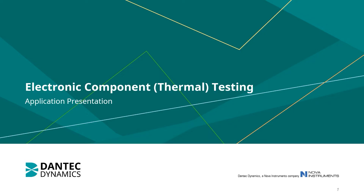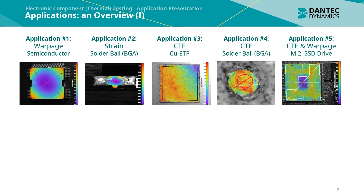Welcome to this application presentation of digital image correlation being used for electronic component thermal testing. The applications presented include warpage measurement of semiconductors, strain measurement of solder balls from a ball grid array, coefficient of thermal expansion or CTE measurements of copper plates and solder balls, and CTE and warpage measurements of an SSD drive.